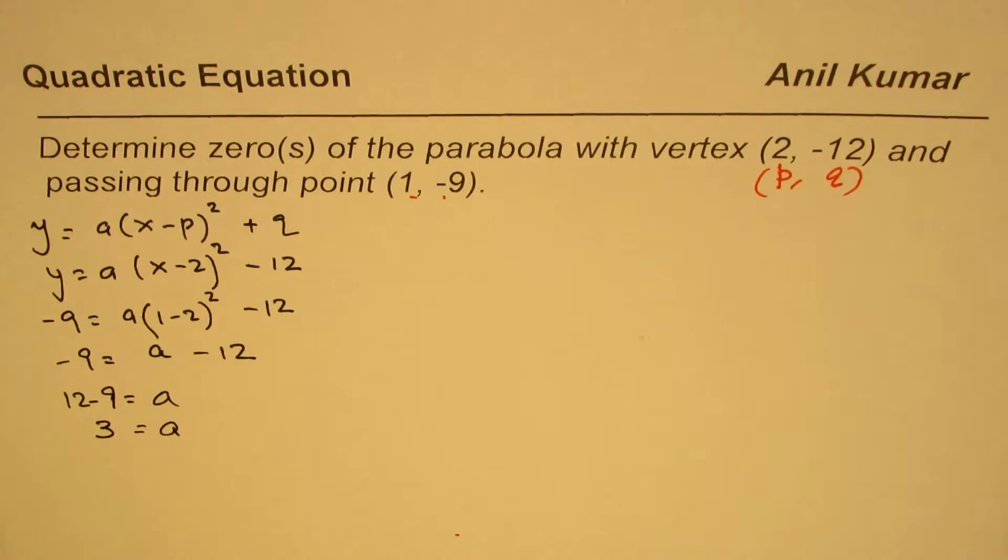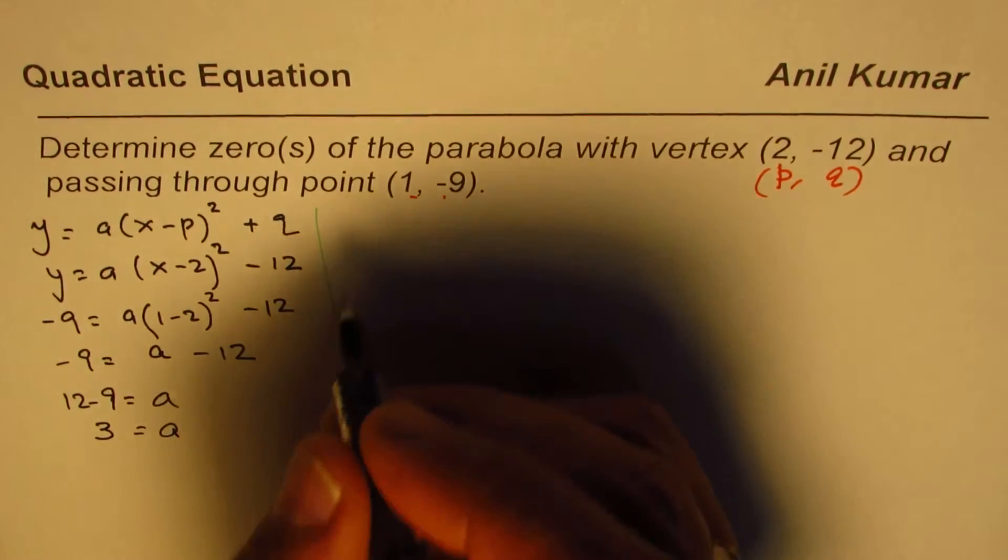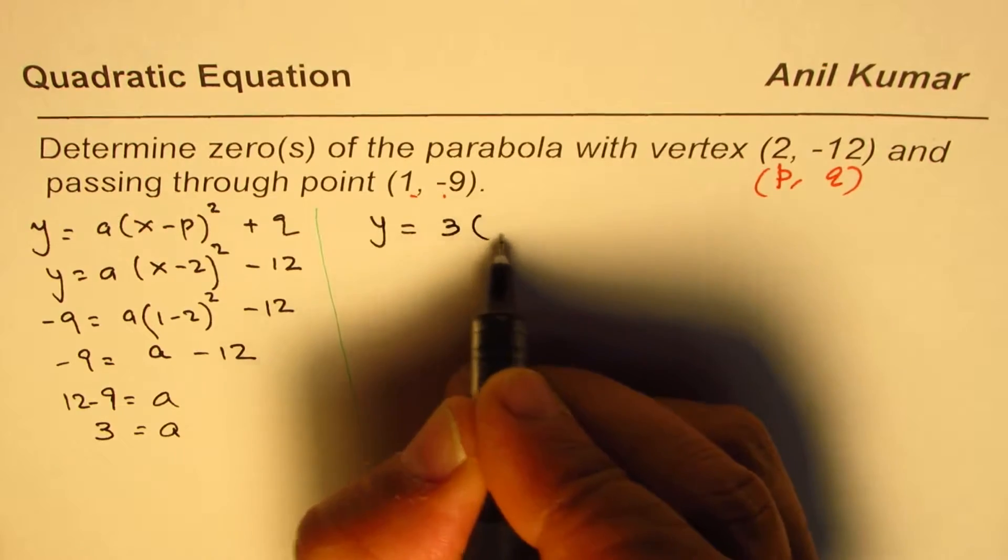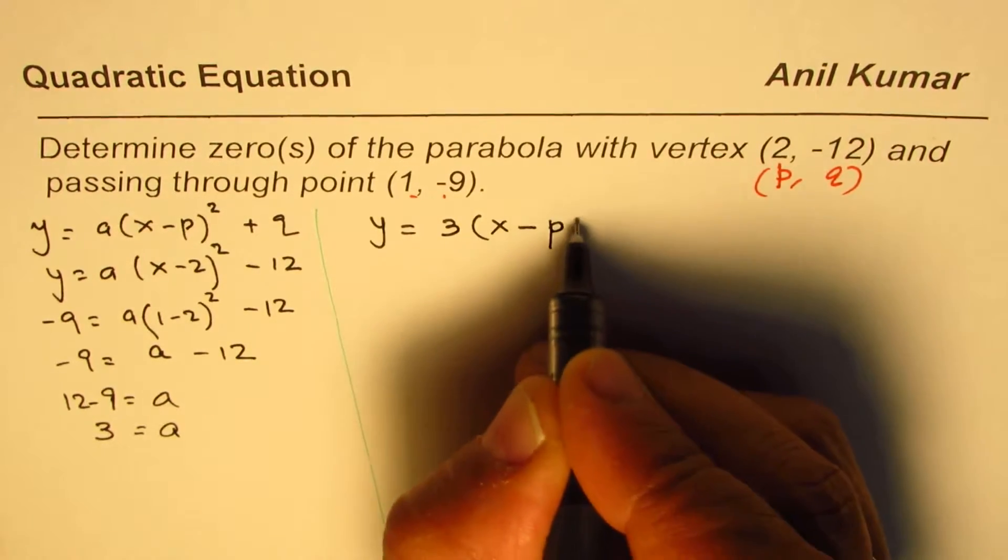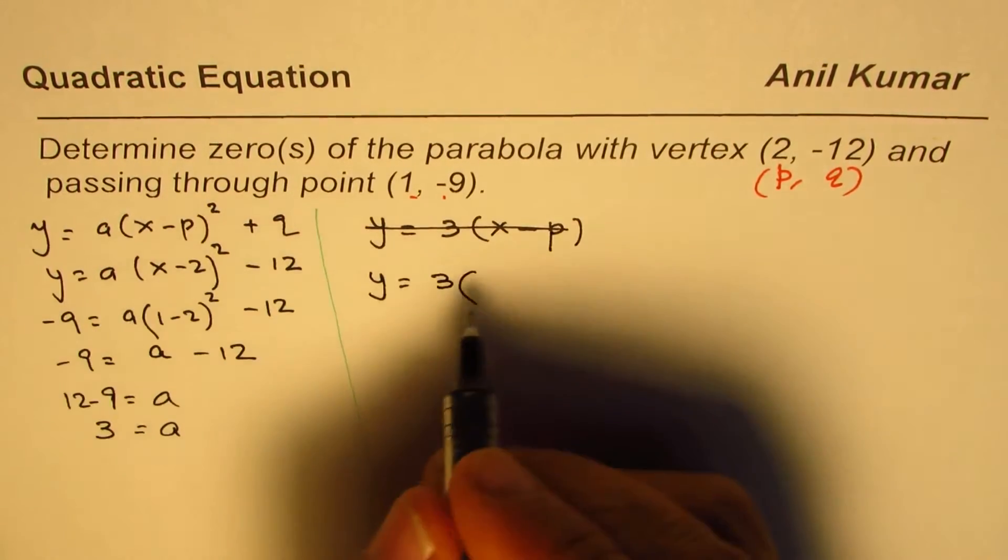So that gives us the equation of the parabola. The first step is getting the equation, which is y = 3(x - 2)² - 12.